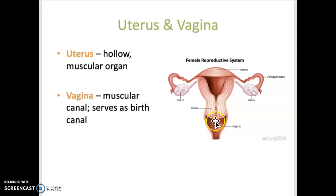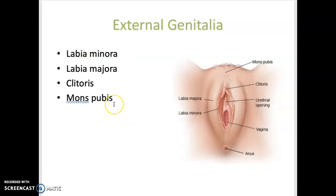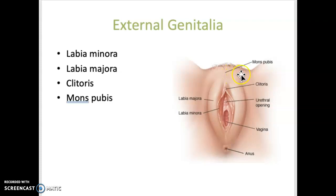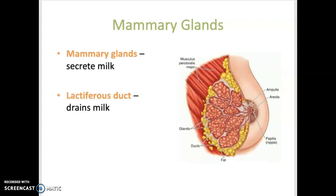The vagina is also the passageway for menstruation. The external genitalia includes the labia minora and majora, which are the folds of skin on either side of the vaginal opening. The clitoris is at the anterior junction of the labia — it's a mass of tissue. The mons pubis is a pad of adipose tissue that cushions the pubic symphysis located underneath it. The mammary glands, located in the breast, secrete milk to nourish a newborn throughout lactation, and the lactiferous duct drains milk from the mammary glands and carries it to the nipple.